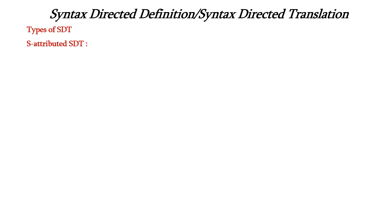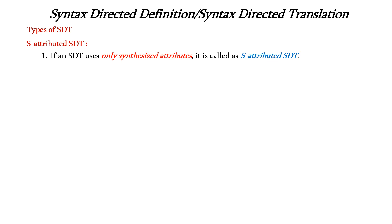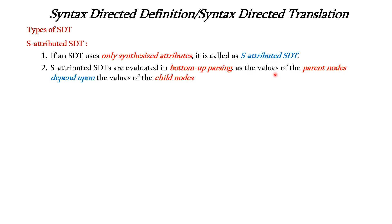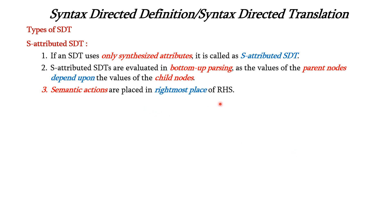Now let us see the types of SDT. We have two types: S-attributed SDT and L-attributed SDT. If an SDT uses only synthesized attributes, it is called an S-attributed SDT. S-attributed SDTs are evaluated in bottom-up parsing, as the values of parent nodes depend on the values of child nodes. Semantic actions can be placed in the rightmost place of the right-hand side of productions.